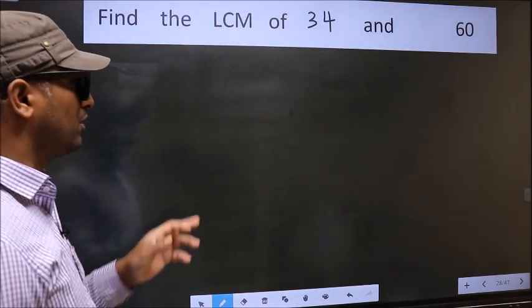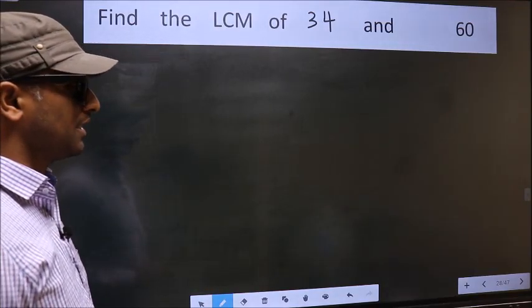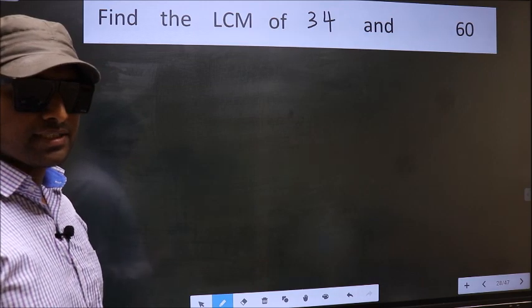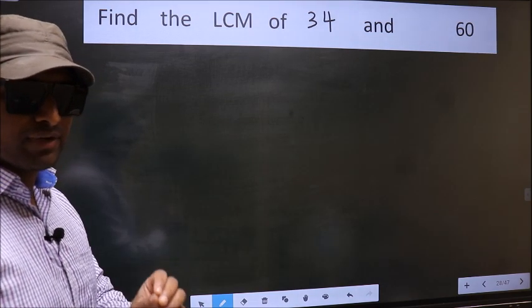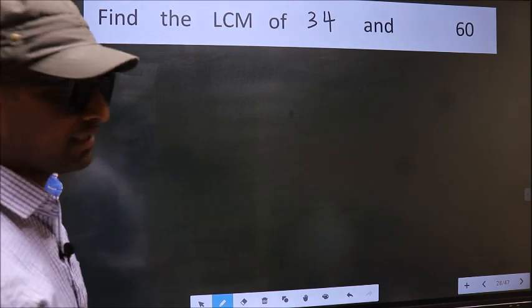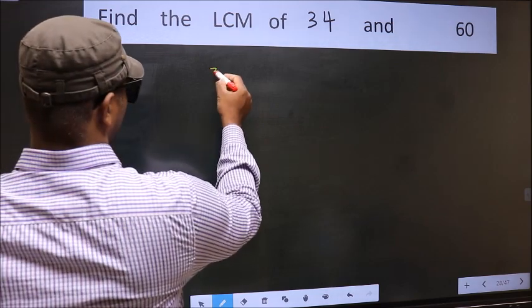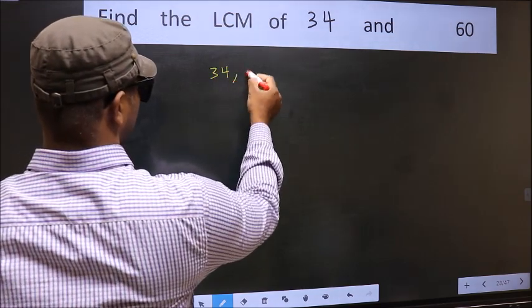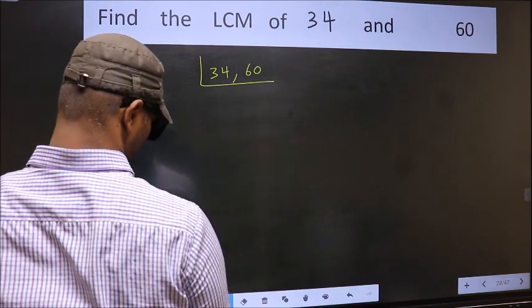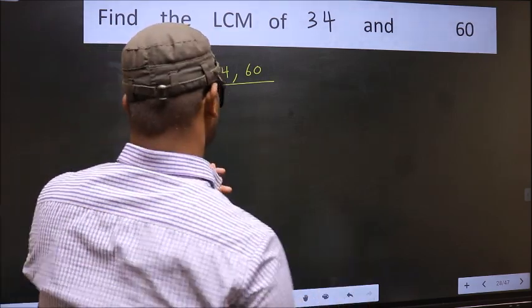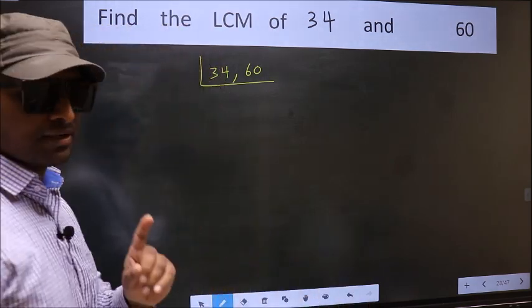Find the LCM of 34 and 60. To find the LCM, first we should frame it in this way: 34, 60. This is your step 1.